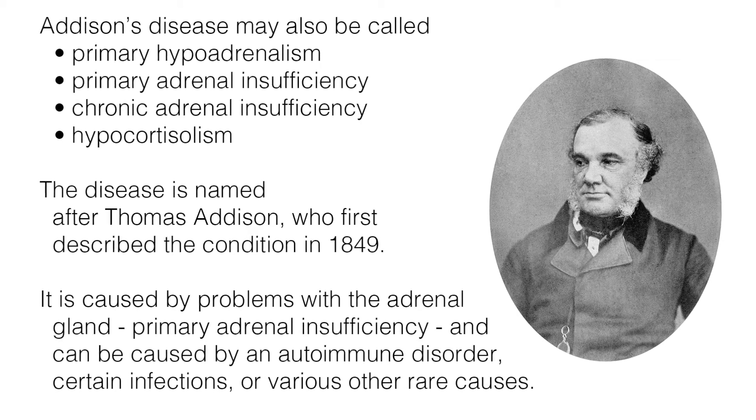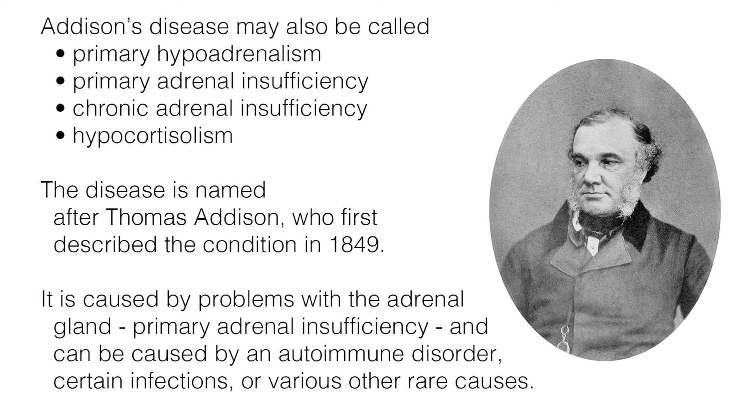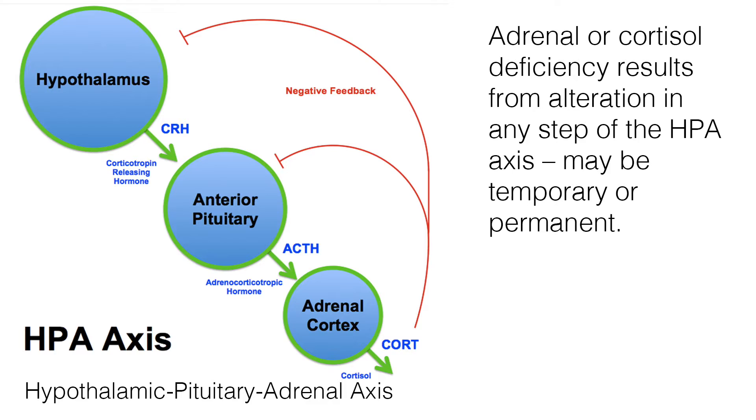Addison's disease is caused by problems with the adrenal gland, and therefore it is often referred to as primary adrenal insufficiency. It is caused by autoimmune disorders, various infections, and other causes that are rare. Adrenal insufficiency, or cortisol deficiency, results from alteration in any step in the hypothalamic pituitary adrenal, or HPA, axis.